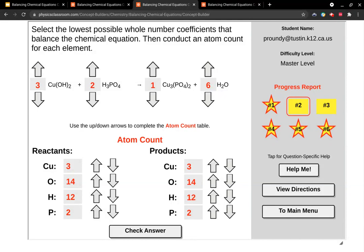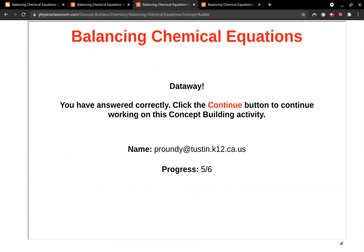And voila, it worked itself out. Sometimes you might have to go back and redo something, but that works out there because all of our atoms counted up to be the same number on the reactants as products. The same number of each type of atom. Mass has been conserved. We check answer, and voila, dataway.